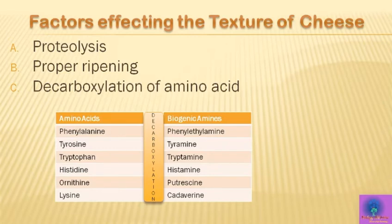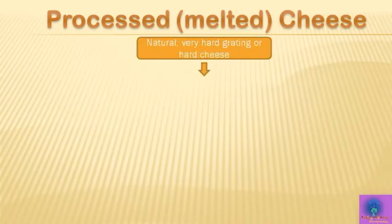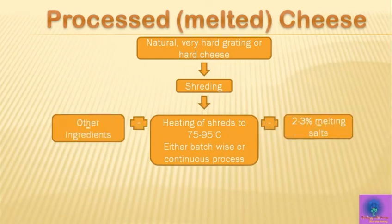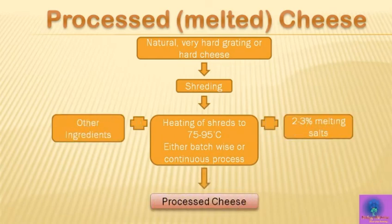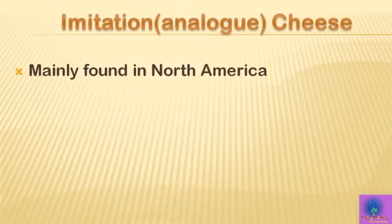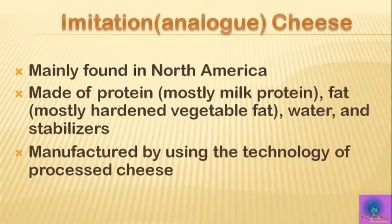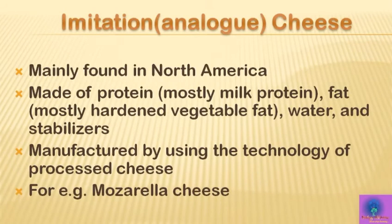Processed cheese can be manufactured by shredding hard cheese, heating it to 75 to 95 degrees, and adding 2 to 3 percent melting salts and other ingredients. Imitation or analog cheese is made up of protein, fat, water, and stabilizers using the same technology as processed cheese.